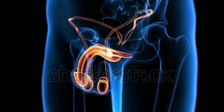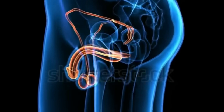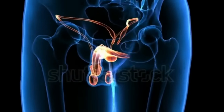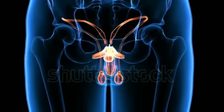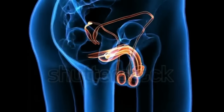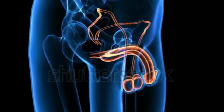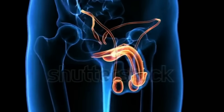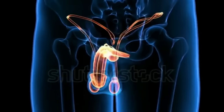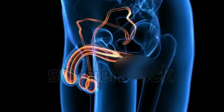Male reproductive system. The human male reproductive system consists of a number of sex organs that are part of the human reproductive process. In the case of men, these sex organs are located outside the man's body around the pelvic region.